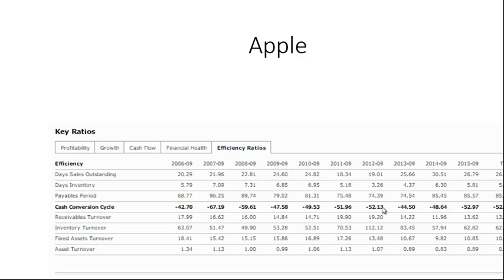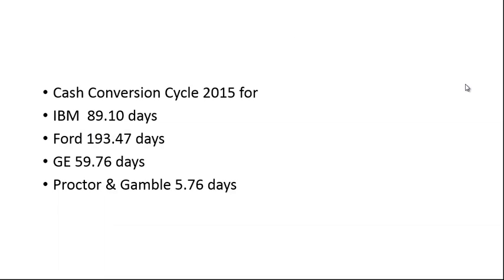This is something of an aberration — you're not going to see negative numbers very often, certainly not this large a negative number. Looking at a few other companies for the same 2015 time period: IBM had a cash conversion cycle of 89.10 days, which is almost three months between paying for materials and receiving cash from customers. Ford is even worse at 193.47 days. It's hard to compare these directly — these are different kinds of businesses. Ford takes a long time to build a car. IBM is somewhat similar to Apple but is more of a consulting and mainframe computer business, having sold its personal computer division to Lenovo.